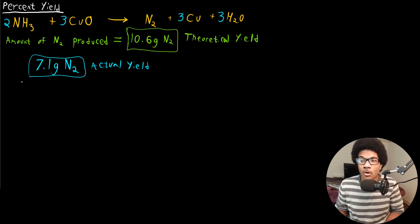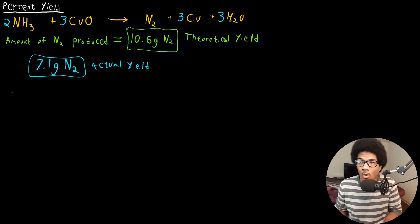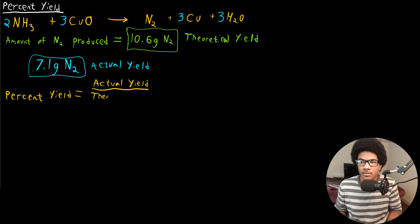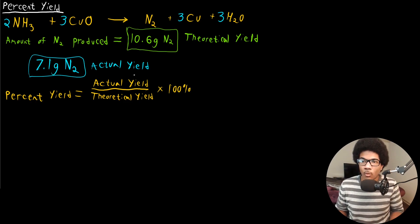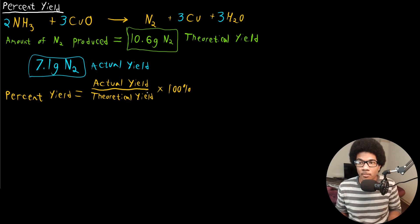In order to quantify how much of your actual yield represents the maximum amount from the theoretical yield, we use something called the percent yield. The percent yield is the ratio between the actual and theoretical yield turned into a percentage: percent yield equals actual yield over theoretical yield times 100%.